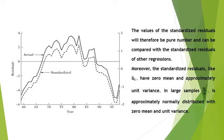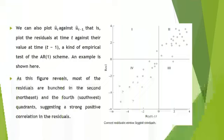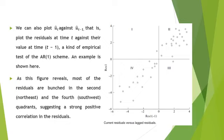We can also plot the residuals against their own lagged values, that is, plot the residuals at time t against their value at time t−1 — a kind of empirical test of the AR(1) scheme. As the figure shows, most of the residuals are clustered in the second and fourth quadrants (north-east and south-west), suggesting strong positive correlation in the residuals. A positive autocorrelation is identified by clustering of residuals with the same sign, while negative autocorrelation is identified by fast changes in the signs of consecutive residuals.